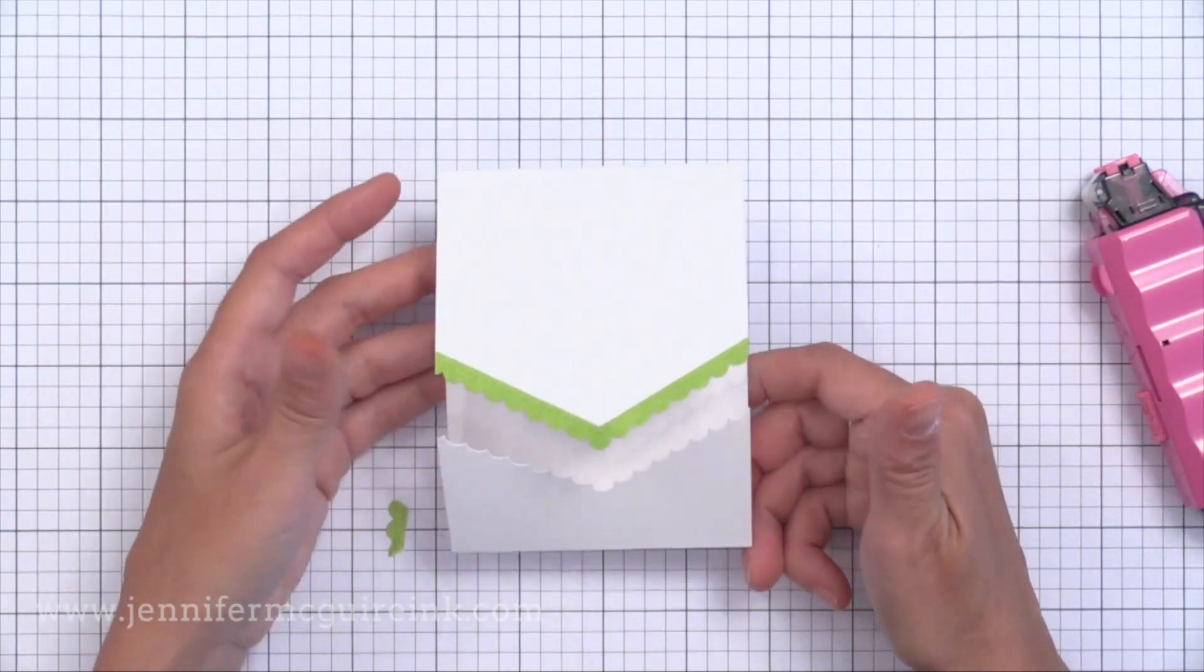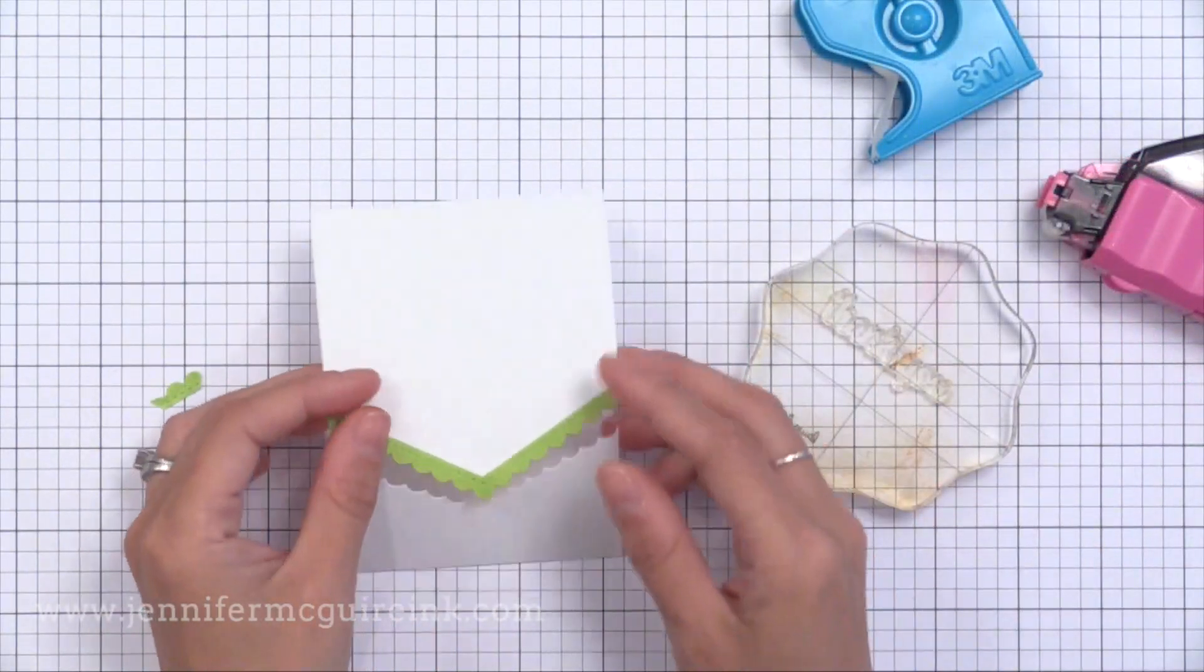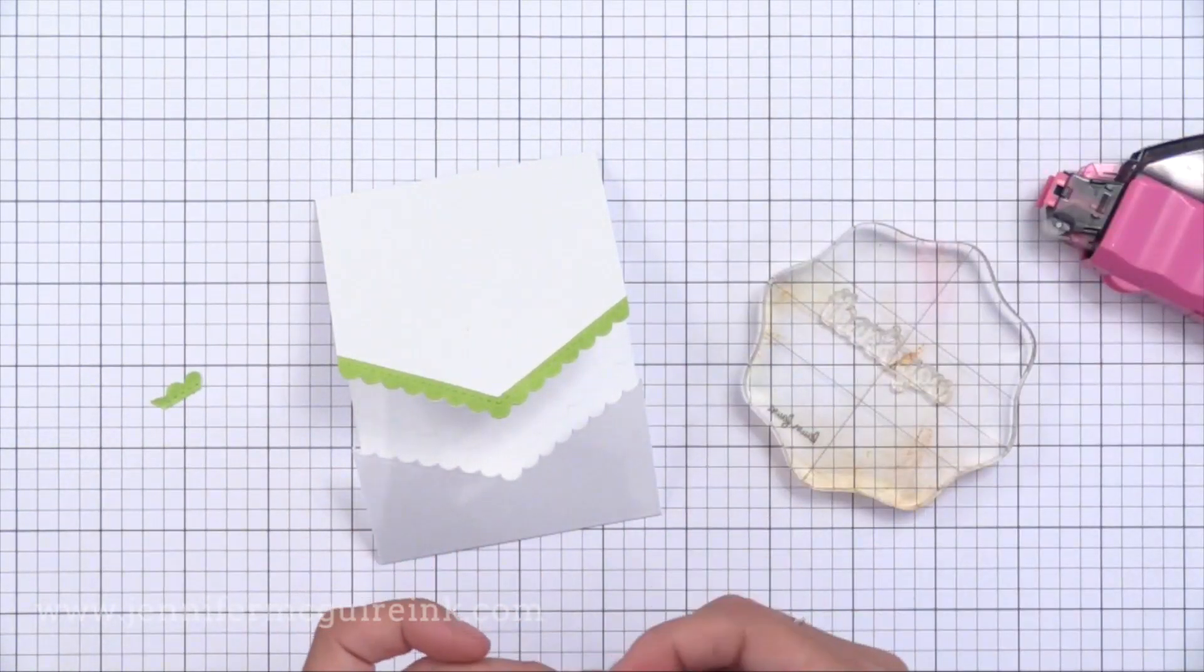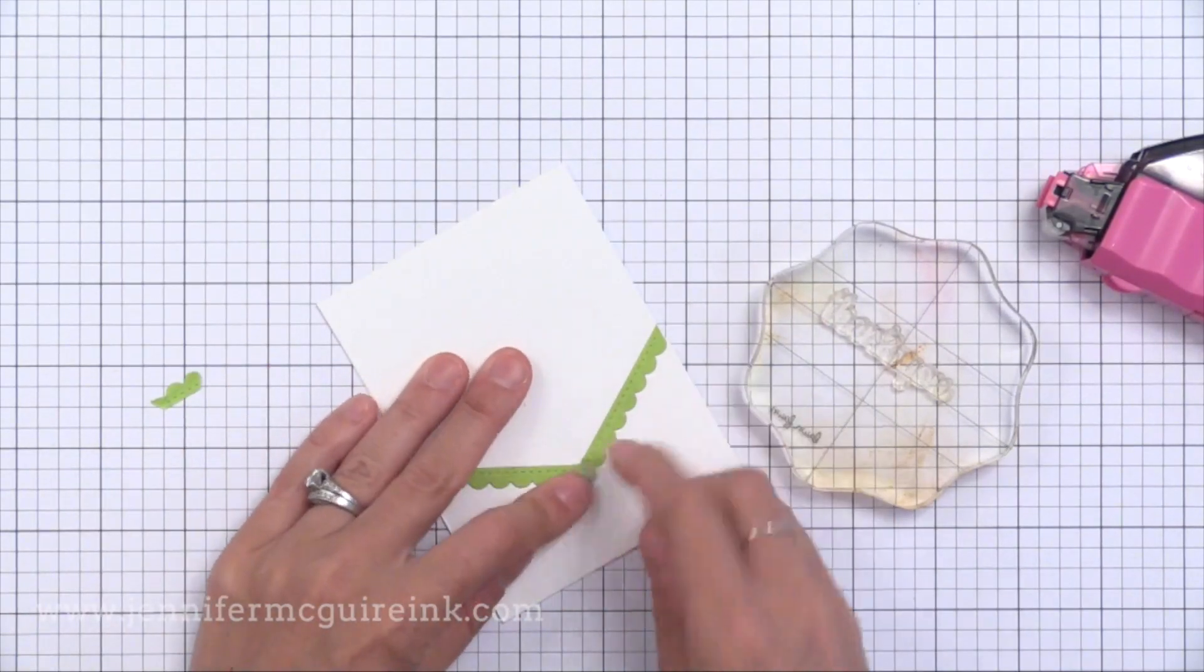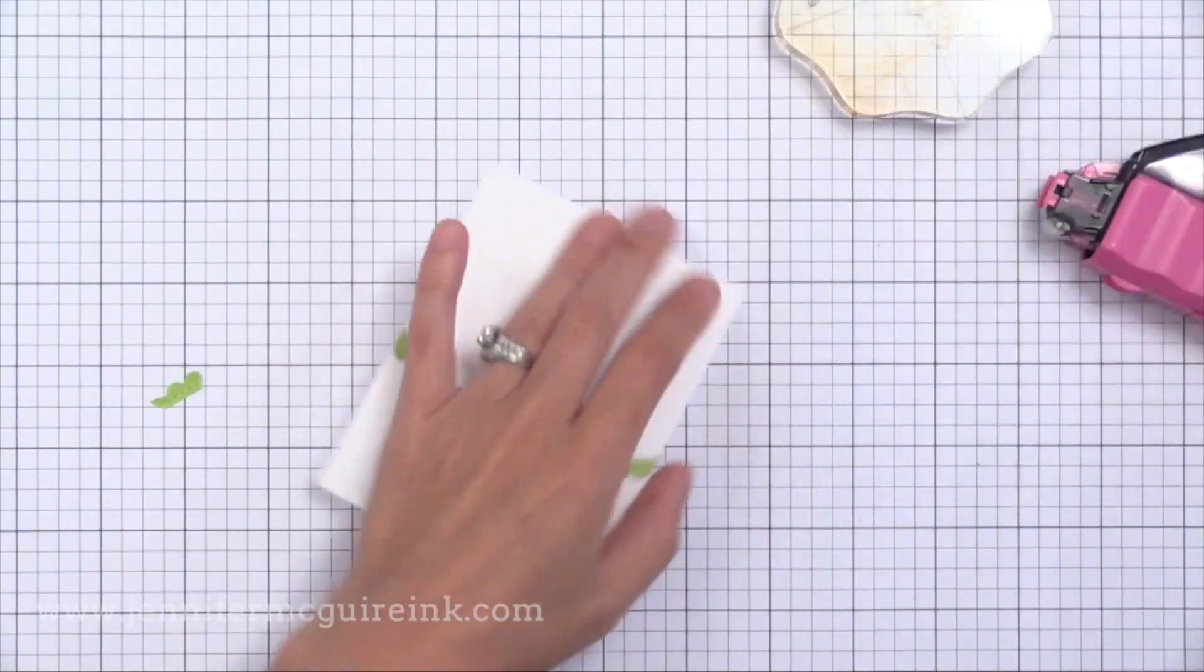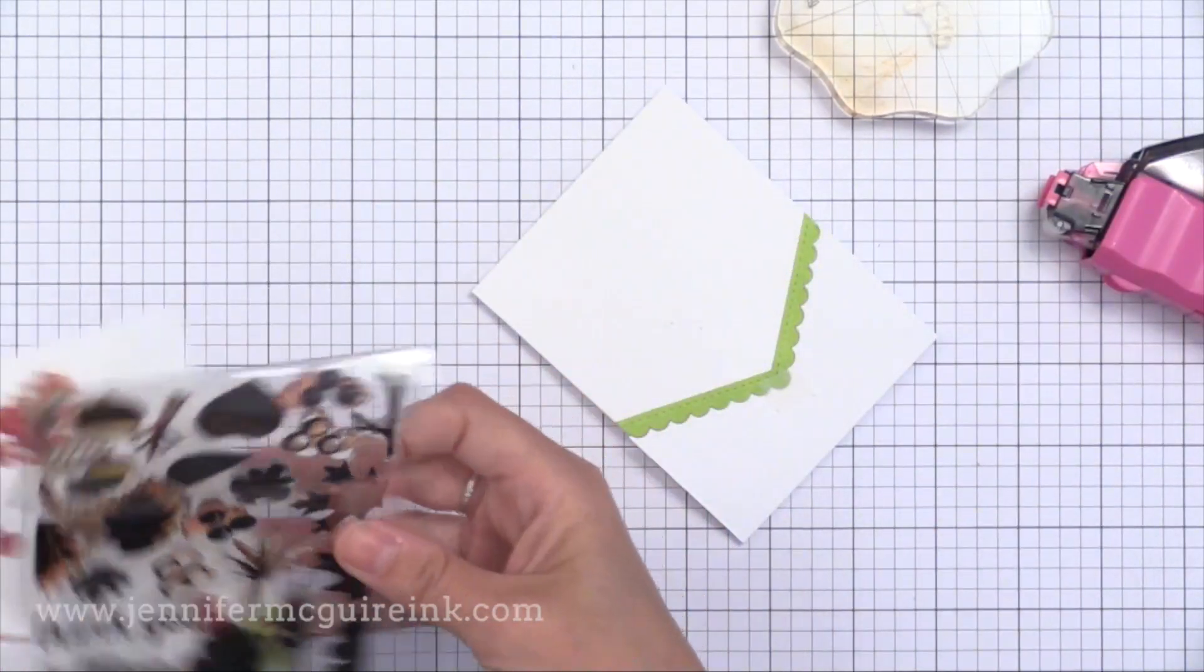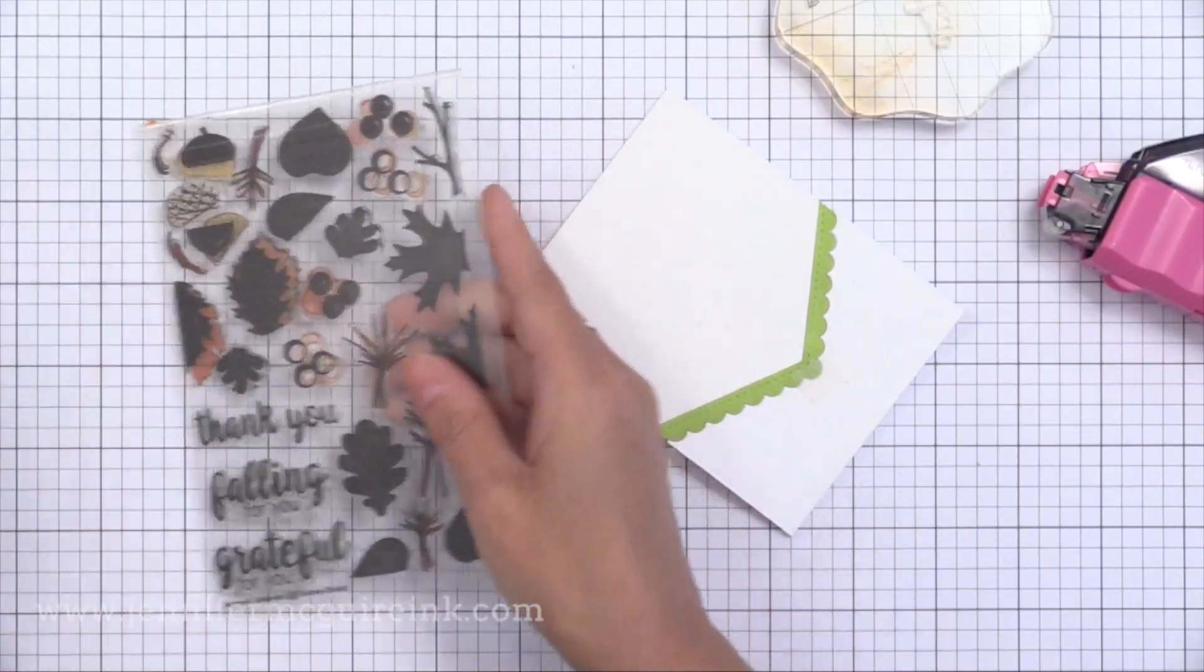Next I'm going to do my sentiment. Now I usually do my sentiment last. But I wanted to do a lot of stamping around the sentiment on the small card. And I wanted to make sure I didn't run out of room for the sentiment. So I'm doing it first this time. I put a little piece of tape to kind of close my card. Because it kind of wants to pop up. And then I just reinforce the score lines.